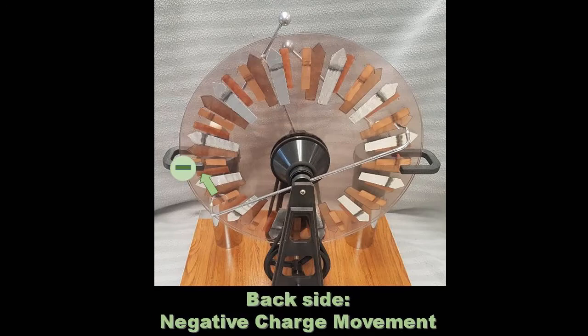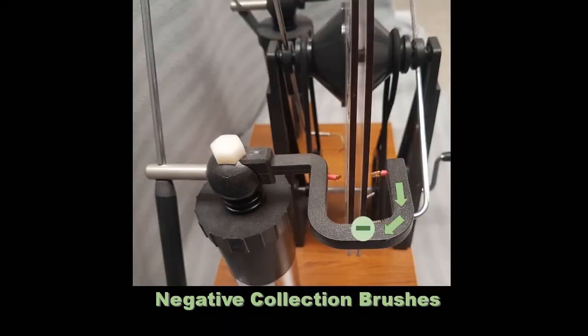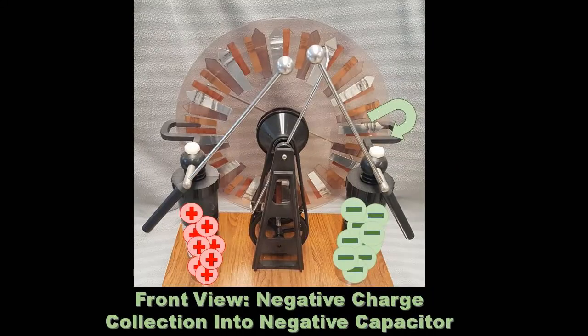The negative charges from both plates are collected by the same collecting combs and capacitor, and therefore the positive charges are also collected similarly on the other side.